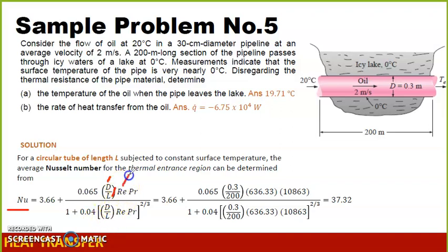The Reynolds number, which is already 636, and the Prandtl number, which is from the table. Just be careful with the parenthesis and the brackets here. So we have Nusselt number 37.32.